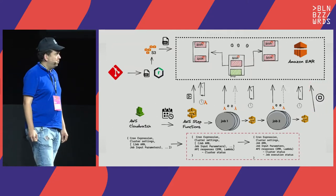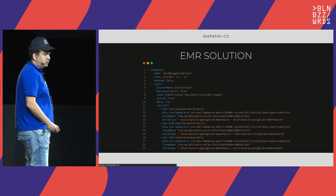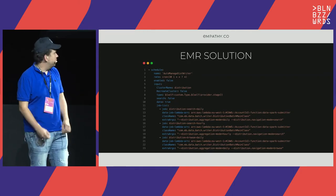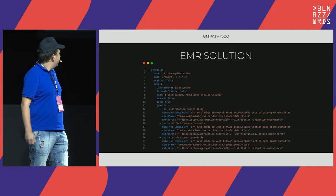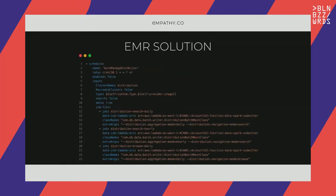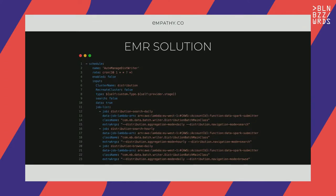Here you can see how we specified the different jobs we wanted to run — the cron expression, the name of the job, the main class containing the Spark logic, and the different arguments. This is what the Step Function takes and runs subsequently.